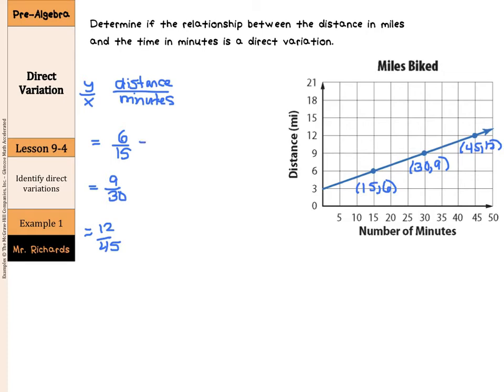Let's see what these simplify into. 6 over 15 simplifies into 2 fifths as we divide 3 on top and bottom. 9 thirtieths as we divide 3 on top and bottom is 3 tenths. And if we divide 3 on top and bottom of 12 forty-fifths, we get 4 fifteenths.